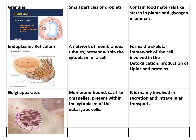Next is the endoplasmic reticulum, one of the most important organelles. It is an irregular network of tubular double membrane, or a network of membranous tubules present within the cytoplasm of a cell. Its functions include forming the skeletal framework of the cell, being involved in detoxification, and the production of lipids and proteins. The main function of the endoplasmic reticulum is the production of proteins.